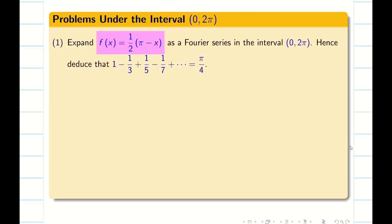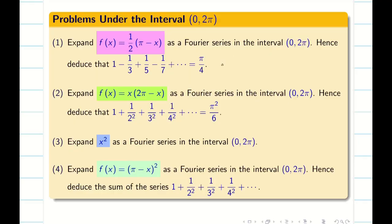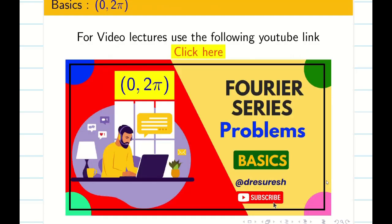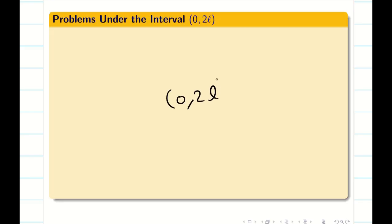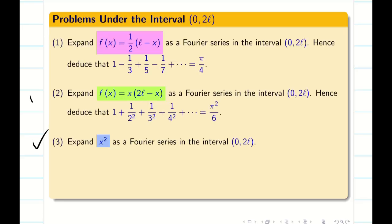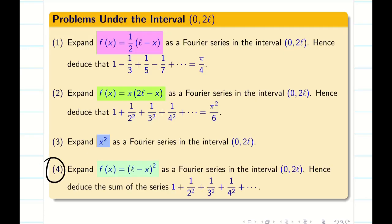In the previous videos we dealt with problems 1, 2, and 3. Now we take problem number 4 as a practice problem for the interval [0, 2π], which I did not solve in the previous videos. The first three problems are already solved in the playlist. Now the same problems can be done for the interval [0, 2L], but to avoid repetition I am giving those three as practice problems. I am going to solve the fourth problem: f(x) = (L − x)².